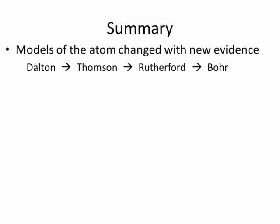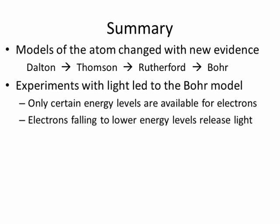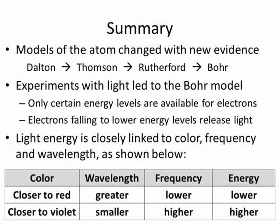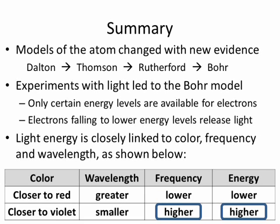Let's summarize what we've just learned. The different models of the atom throughout history proceeded from Dalton through Thomson, Rutherford, and Bohr. Bohr's model was based on experiments with light that we saw at the beginning of this video. Only certain energy levels are available, which is why you only see certain bright lines in the spectrum of hydrogen. Electrons falling to lower energy levels release light. Light energy, color, frequency, and wavelength are all closely linked. Greater wavelength corresponds to lower frequency; high frequency corresponds to high energy; and small wavelength goes with high energy.